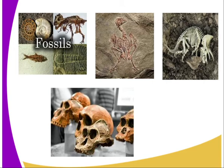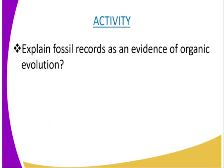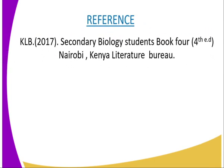Looking at posture, you can see the ape walks on fours, while the human is upright. The brain capacity of humans is higher compared to the apes. Having said that, we can have the following activity, where you are required to explain how fossil records are evidence of organic evolution. For more of this lesson, you can refer to KLB Secondary Biology Students Book 4, fourth edition.